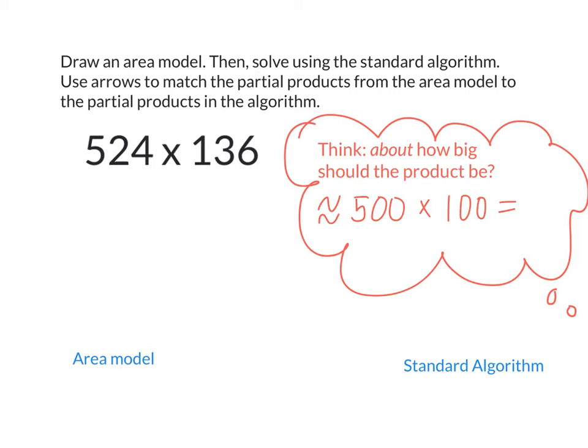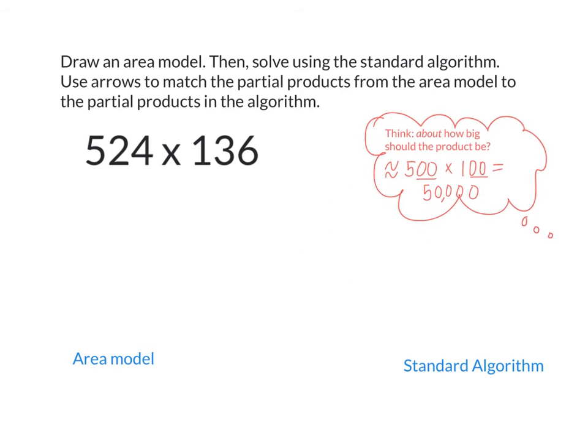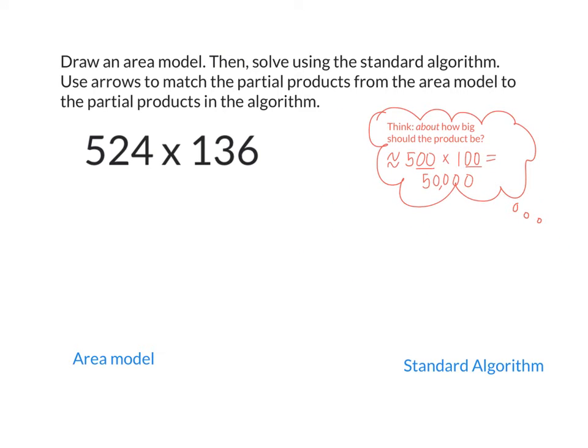So this should be kind of about the same size as 500 times 100. So what's 5 times 1? And how many factors of 10 do I have? 1, 2, 3, 4. So let's add 4 factors of 10. So our answer should be pretty close to 50,000. Should our actual answer be bigger than 50,000 or smaller than 50,000? Because we made both numbers smaller, we know our actual answer should be larger than 50,000, but it should be in the ballpark range in the zone of 50,000. Go ahead and draw that estimation. Make sure you write that down because that's going to help us make sure our answer is reasonable.